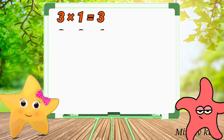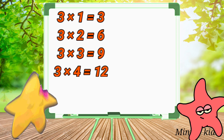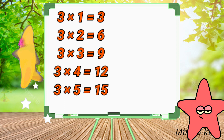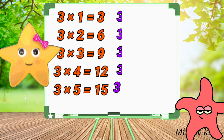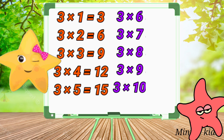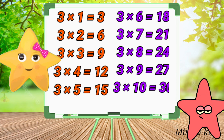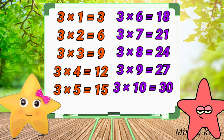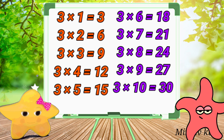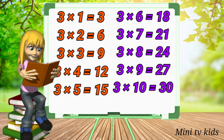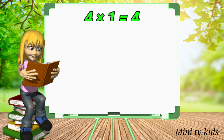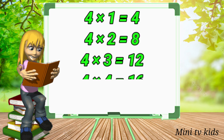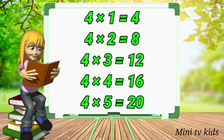3 10's are 30. 3 1's are 3, 3 2's are 6, 3 3's are 9, 3 4's are 12, 3 5's are 15. Table of 4. 4 1's are 4, 4 2's are 8, 4 3's are 12.